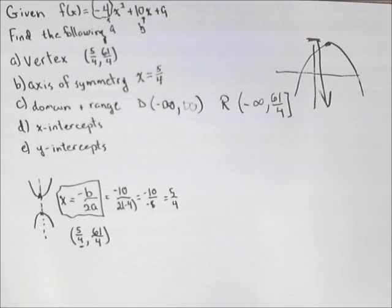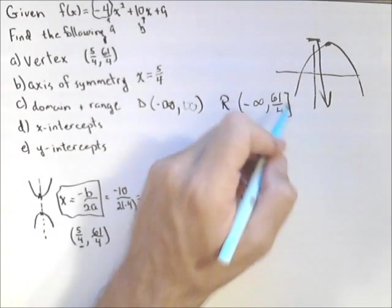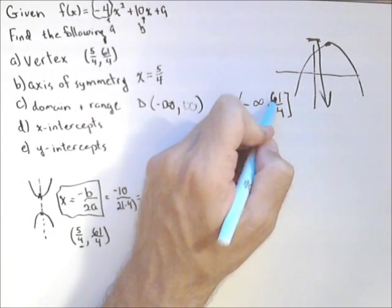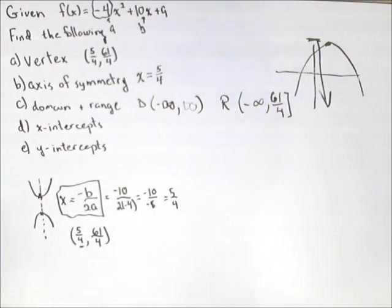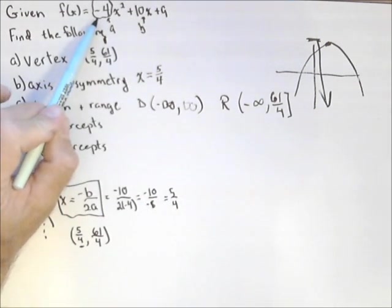So we can always find our range from the y-coordinate of our vertex. It's either going to be from the y-coordinate up, or from negative infinity up to our y-coordinate, depending on which way our parabola is opening. All you've got to do is look at the a-value.